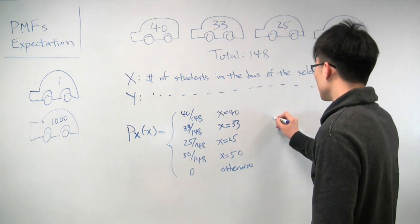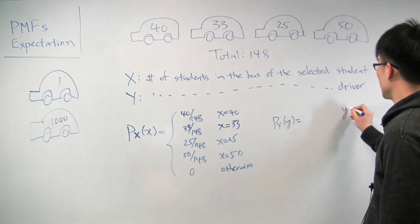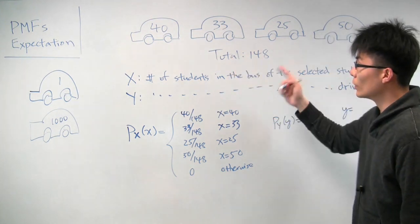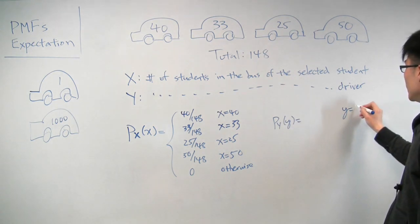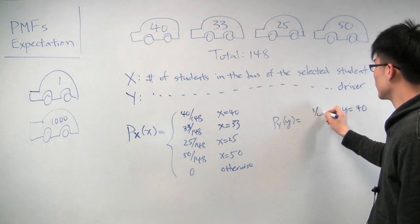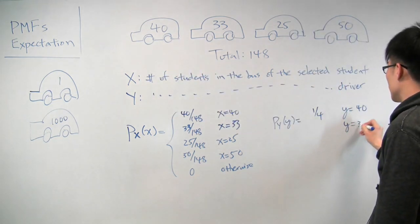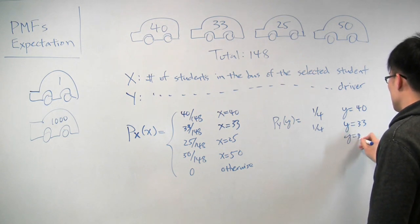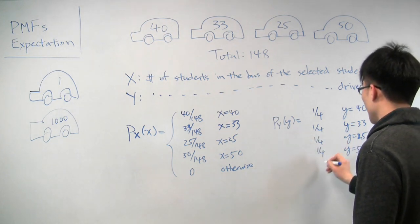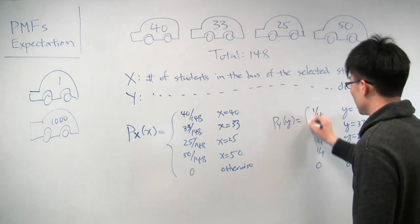And we can do the same thing for y. The PMF of y, again, we say, what is the probability that y will take on certain values? Well, y can take on the same values as x can, because we're still dealing with the number of students in each bus. So y can be 40, but the probability that y is 40, because we're selecting the driver at random now, is 1/4, because there's a 1/4 chance that we'll pick this driver. And the probability that y will be 33 will also be 1/4, and the same thing for 25 and 50. And it's 0 otherwise.